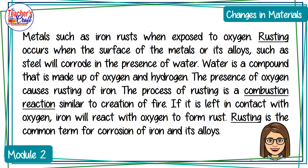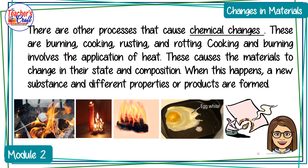Rusting is a common term for corrosion of iron and its alloys. There are other processes that cause chemical changes: burning, cooking, rusting, and rotting. Cooking and burning involve the application of heat, which causes materials to change in their state and composition. When this happens, a new substance with different properties or products is formed.